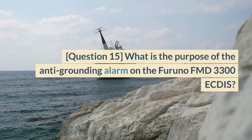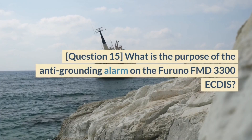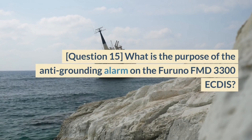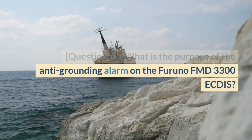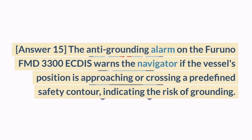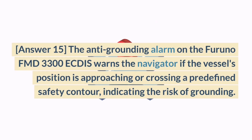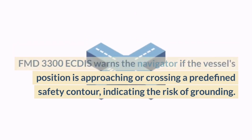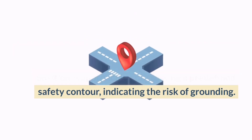Question 15. What is the purpose of the anti-grounding alarm on the Furuno FMD 3300 ECDIS? Answer 15. The anti-grounding alarm warns the navigator if the vessel's position is approaching or crossing a pre-defined safety contour, indicating the risk of grounding.